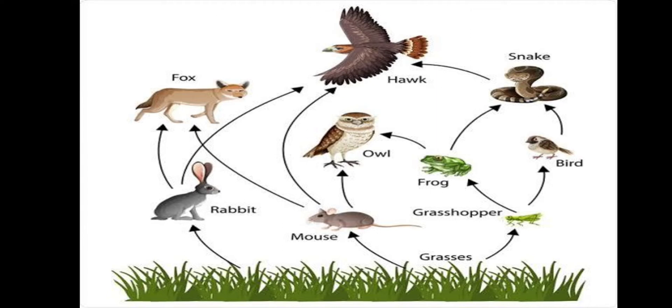In a food chain example: primary producers are eaten by herbivores, herbivores are consumers, then carnivores follow, and finally decomposers. For instance, plants were eaten by grasshoppers, grasshoppers were eaten by frogs, frogs were eaten by snakes, and finally snakes were eaten by eagles, with eagle decomposers at the end.